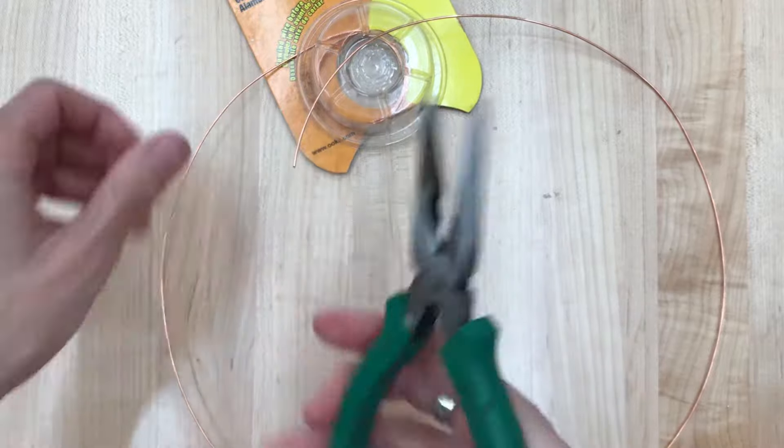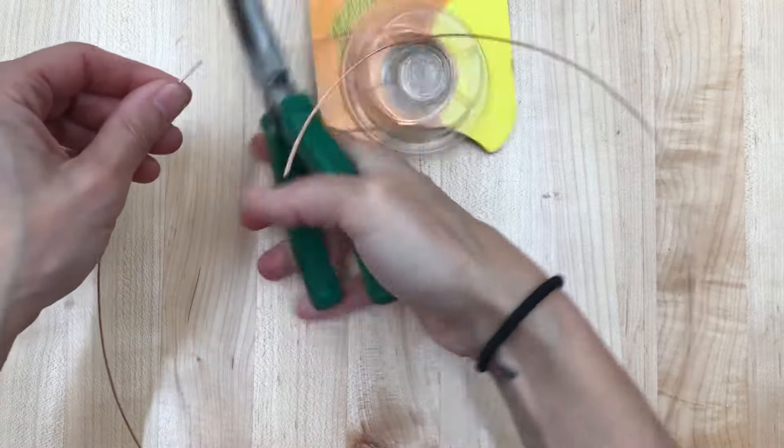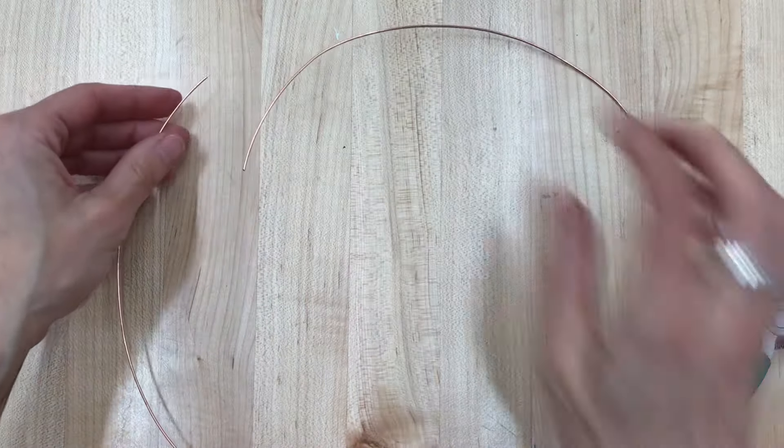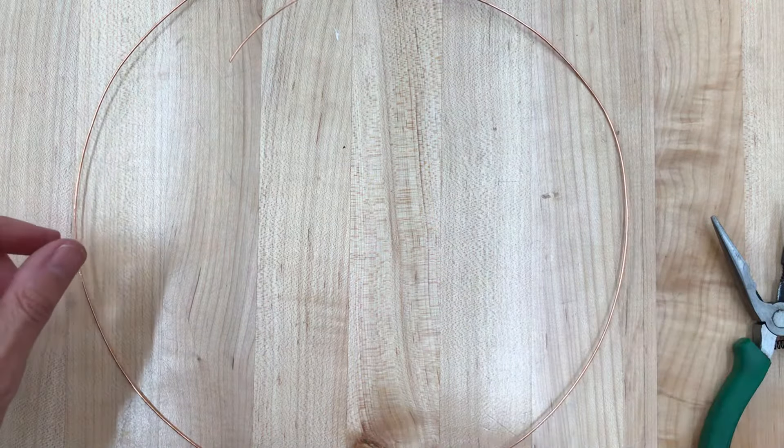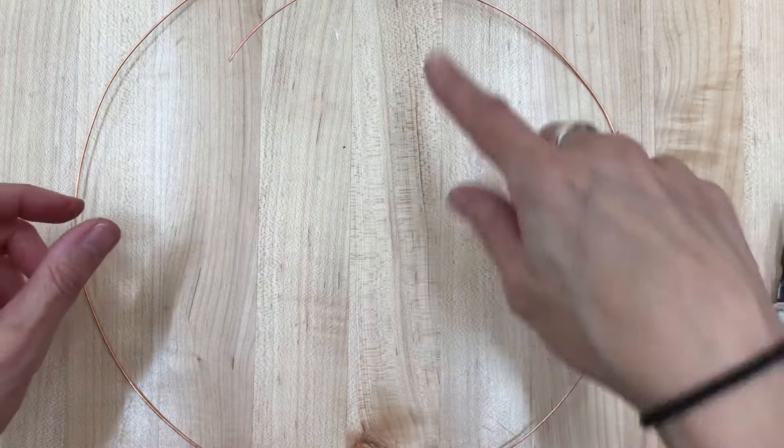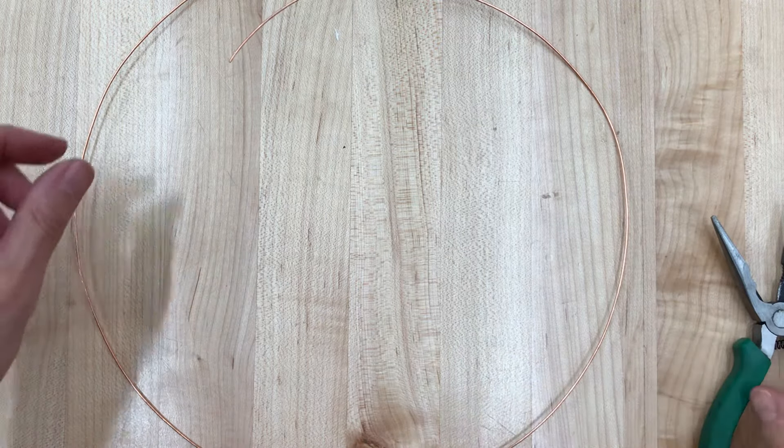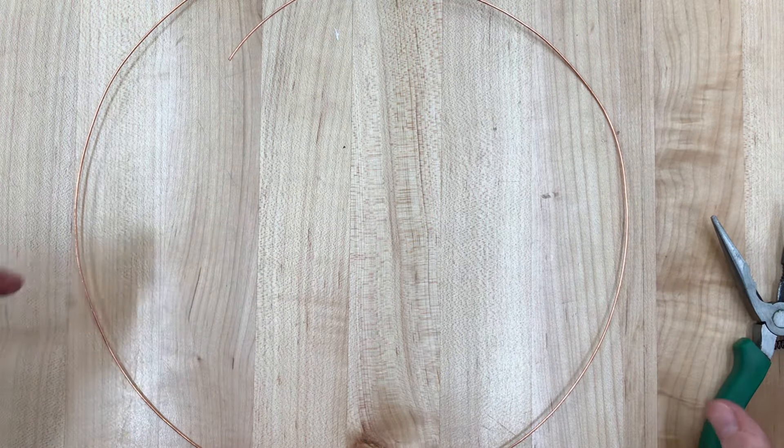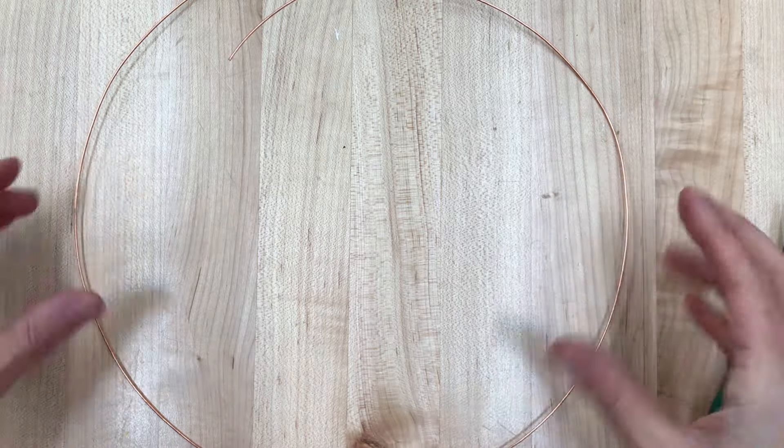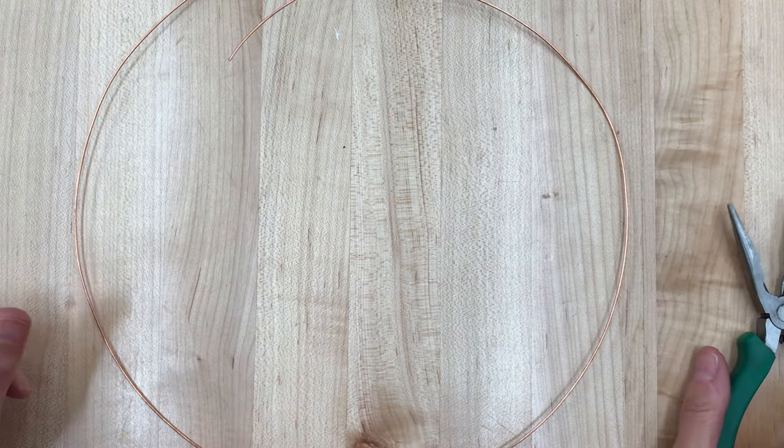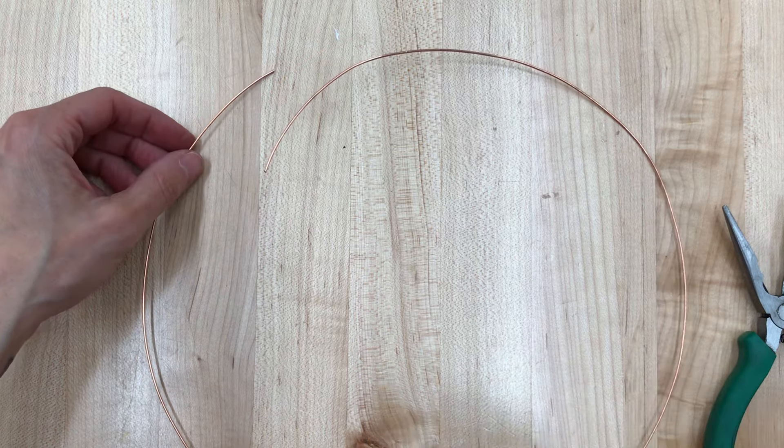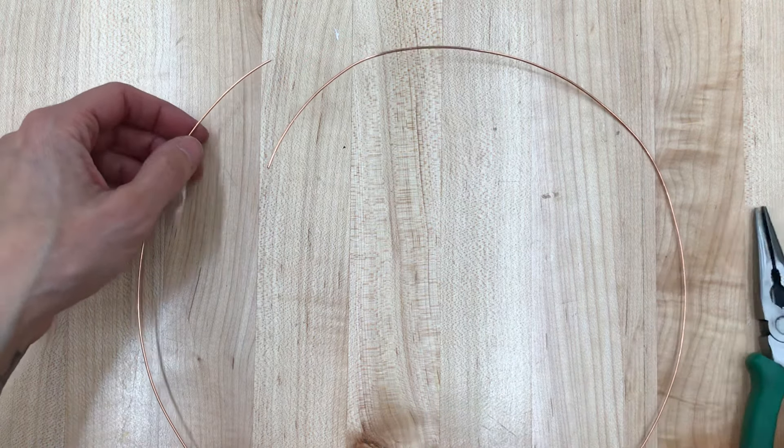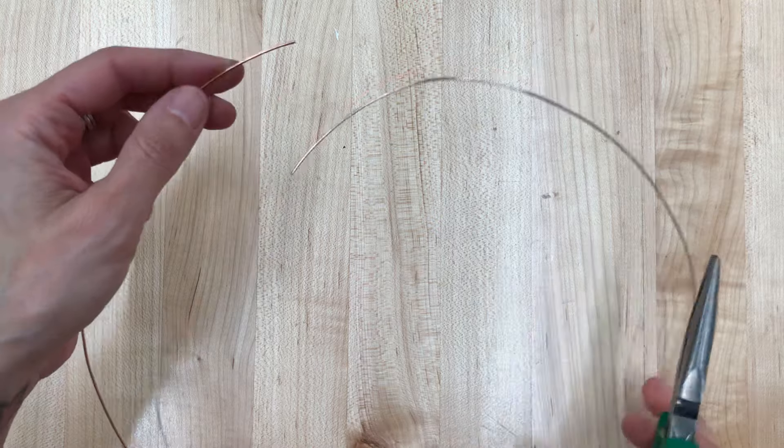And then I'm going to use the pliers to cut the wire. So you notice when I pull it off the spool, it wants to live in this circle because metal has a memory to it. And because it's lived in the spool, it wants to kind of stay in this circular shape. That is the reason why I have you start with a sphere, because believe it or not, it's one of the easier forms you can make.